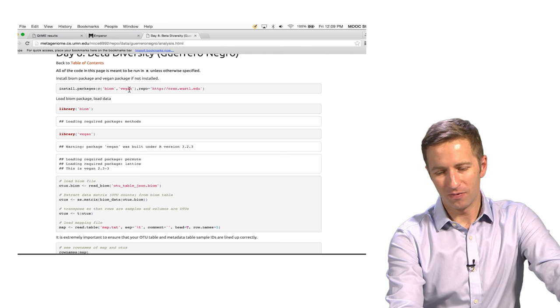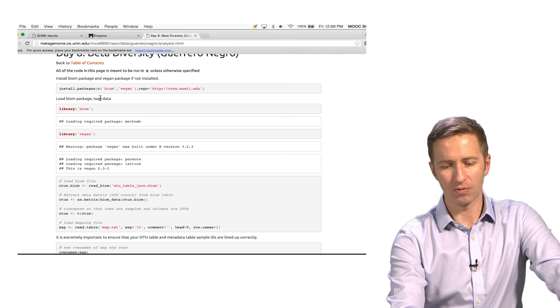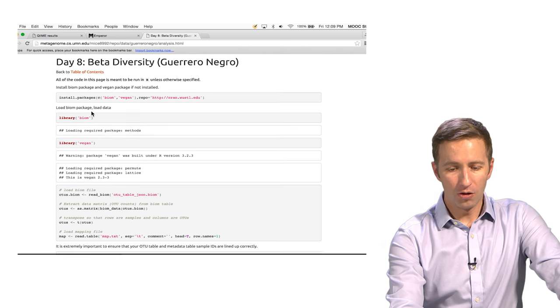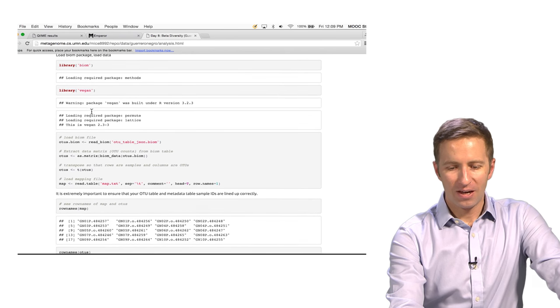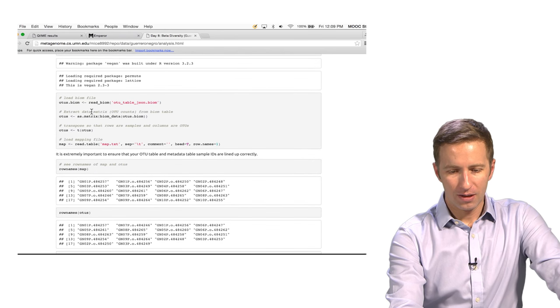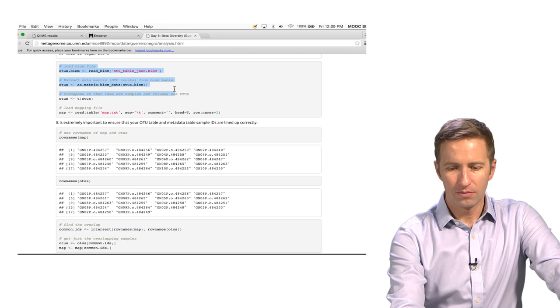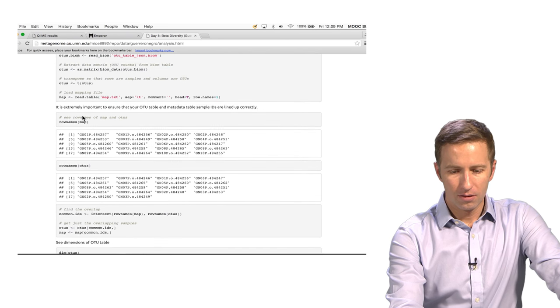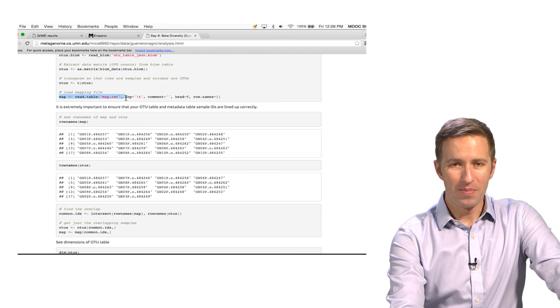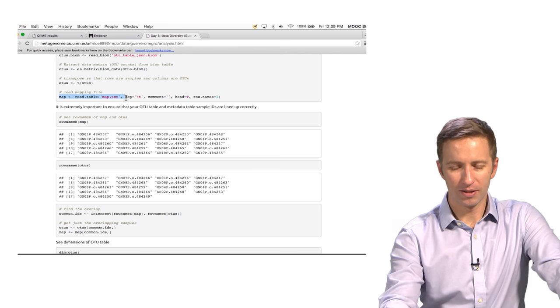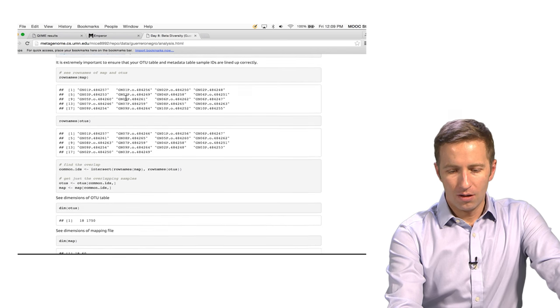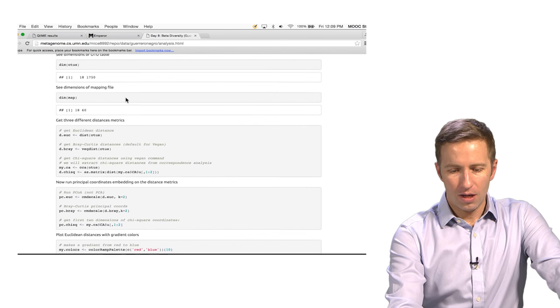And this tells you everything you need to do to get this working. These are commands that you would run in R. So you need R installed and then you'd have to install the biome and the vegan package if you don't have them. So you only need to run that once to load the packages, then this is how we load the data,